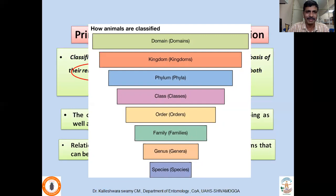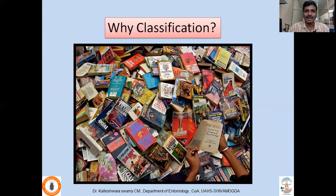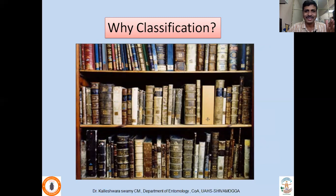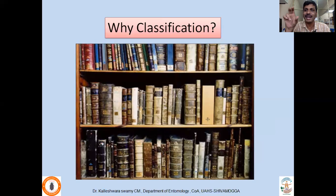Why classification? In a simple way — assume you enter a library where you want to search for an entomology book, but hundreds of books are dumped on a table. How much time will it take if there are 100, 1,000, or 10,000 books? But if they are arranged precisely — entomology, agronomy, pathology — or within entomology: taxonomy, toxicology, biological control — it is very easy to find that book. Similarly, if organisms are classified, what you are communicating can be clearly addressed.